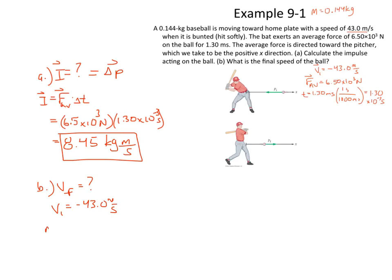And we know that the mass of the ball is 0.144 kilograms. If we know that the change in momentum, also known as impulse, equals 8.45 kilogram meters per second, we should be able to find that final velocity of the ball.